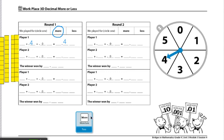Players will start the next round by rolling the more or less die one more time and spinning the spinner until they've completed all four rounds on the sheet. These are the end of the directions for Workplace 3D decimals more or less.